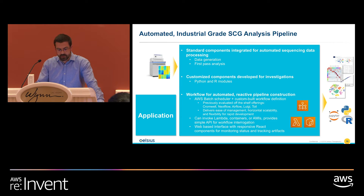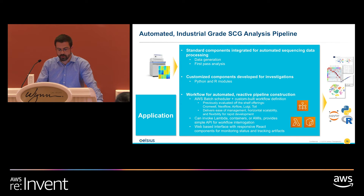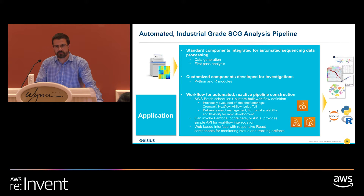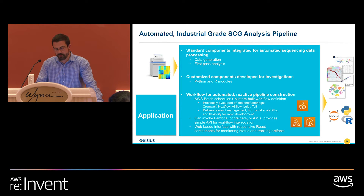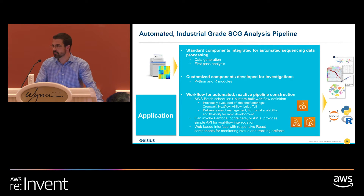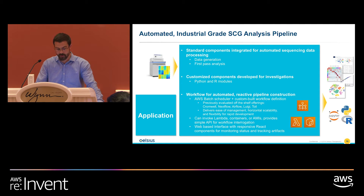For the analysis of the raw sequencing data we're using standard components for alignment and expression quantification, all packaged in a custom workflow built using AWS Batch directly. We explored multiple tools for running workflows such as Nextflow, Airflow, and Cromwell, but we determined the time to encapsulate all the analysis steps was almost equivalent, and we had more control over the scheduling of all pipeline steps by using AWS Batch directly. We've been fairly happy with our solution since then.